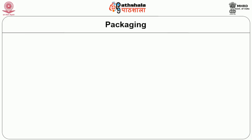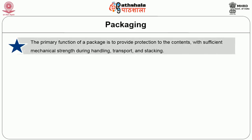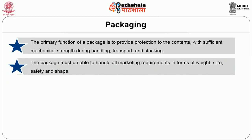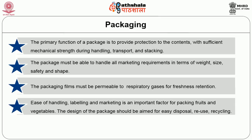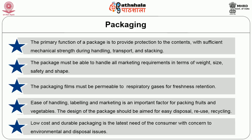The final step is packaging of the agricultural commodities. The primary function of a package is to provide protection to the contents with sufficient mechanical strength during handling, transport and stacking. The package must handle all marketing requirements in terms of weight, size, safety and shape. Packaging films must be permeable to respiratory gases for freshness retention. Ease of handling, labelling and marketing is an important factor for packing fruits and vegetables. The design of the package should be aimed for easy disposal, reuse or recycling, with low cost and durable packaging being the latest need of the consumer.